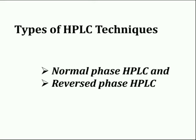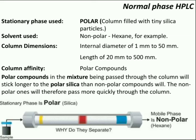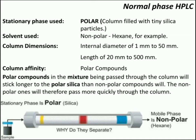HPLC techniques are of two types: normal phase HPLC and reverse phase HPLC. In normal phase HPLC, a polar stationary phase is used — it is usually a column filled with tiny particles of silica. The solvent used is nonpolar, for example hexane. Column dimensions used in normal phase chromatography are an internal diameter of 1 mm to 50 mm and a length of 20 mm to 500 mm.